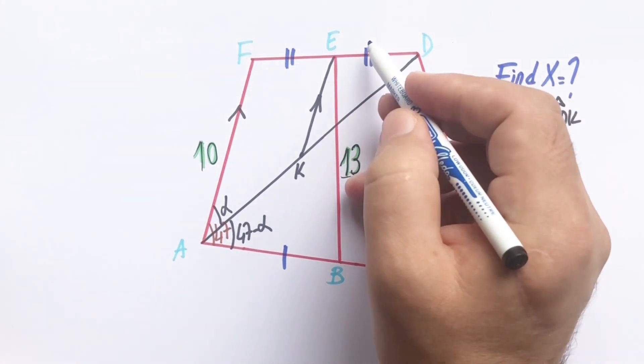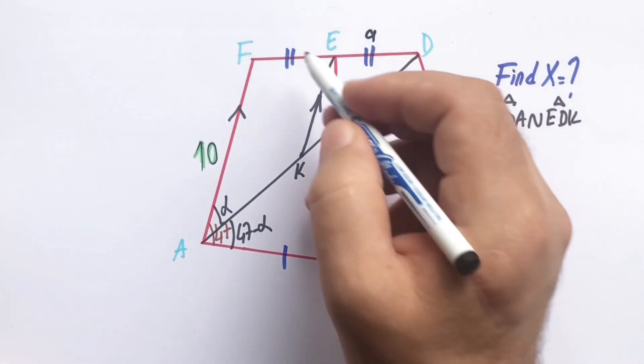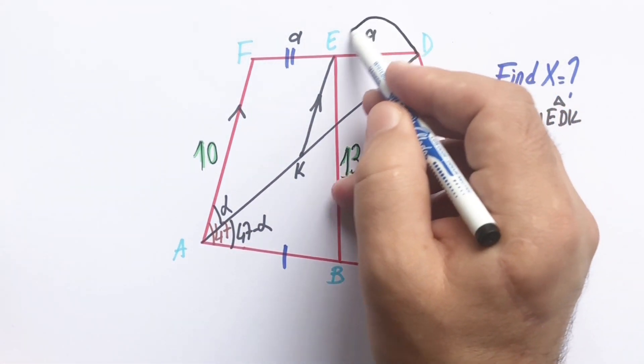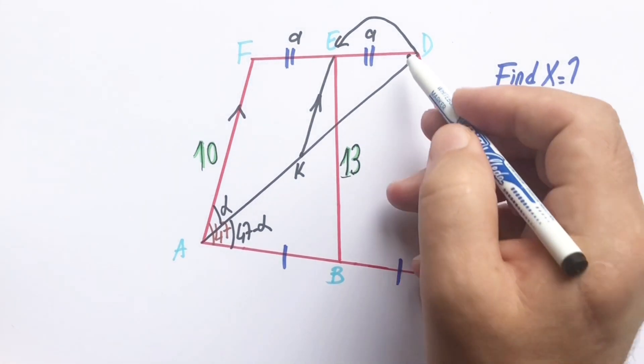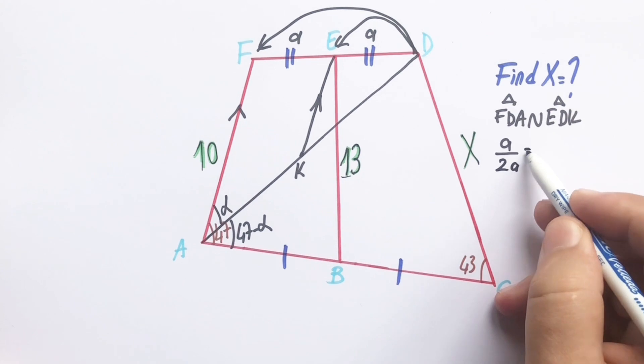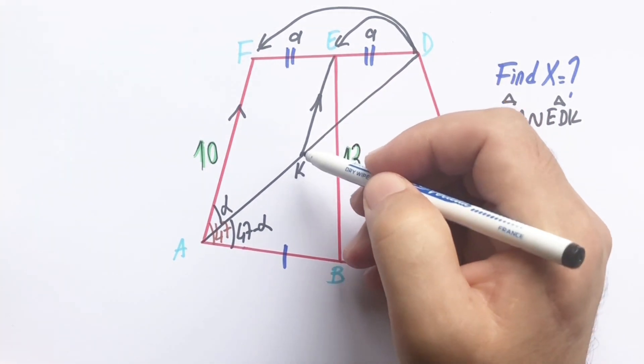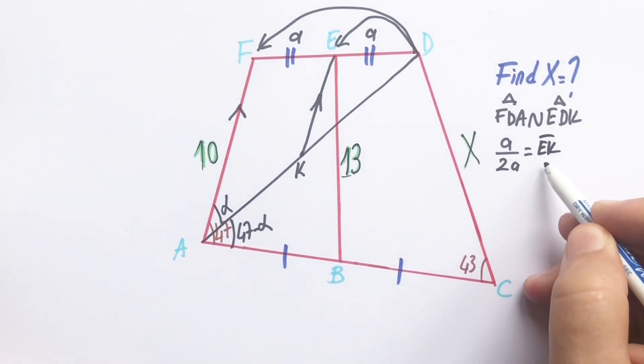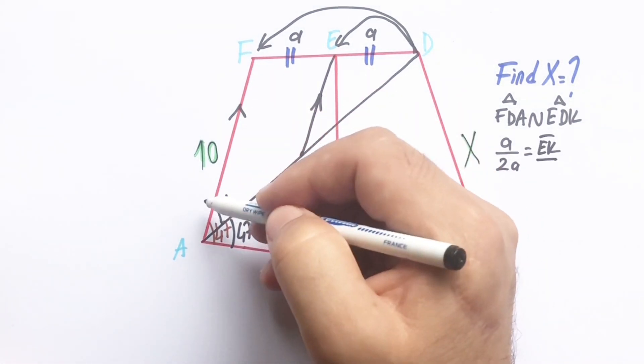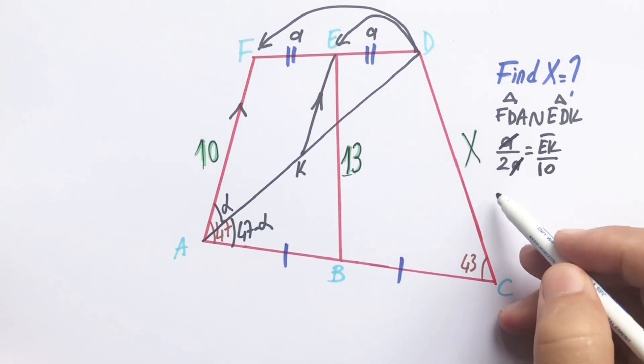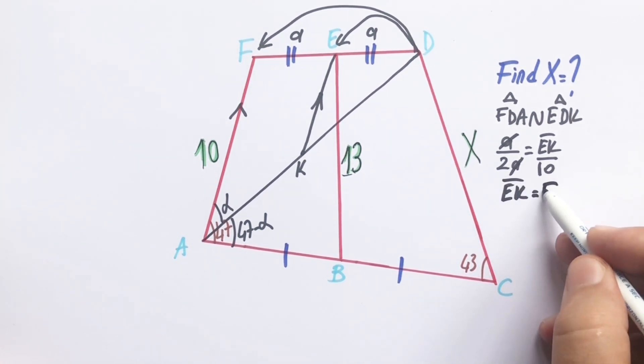Let's call these two lengths A units. A over 2A equals length of the AK over 10 units. These are gone, AK is going to be 5 units.